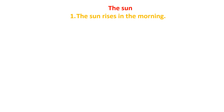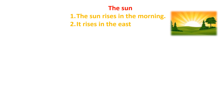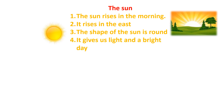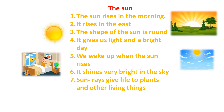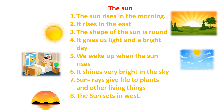Now let's revise the whole points. The sun: The sun rises in the morning. It rises in the east. The shape of the sun is round. It gives us light and a bright day. We wake up when the sun rises. It shines very bright in the sky. Sun rays give life to plants and other living things. The sun sets in the west. This was all about the sun essay.